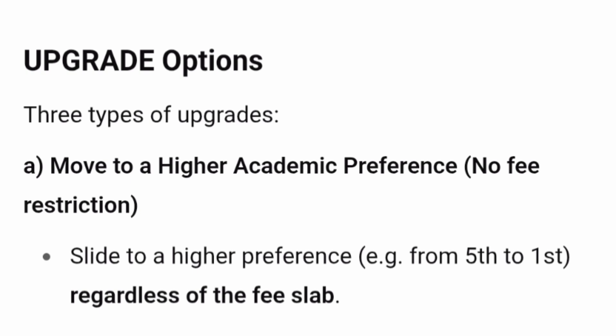There are three types of upgrade options. Type A: Move to a higher academic preference with no fee restriction. That means you want to move from, say, 5th preference to 1st preference, and you are not concerned about the fee slab changing — even if the fee slab goes from 1 to 2, or from 2 to 3, that is acceptable because your priority is a higher academic preference.